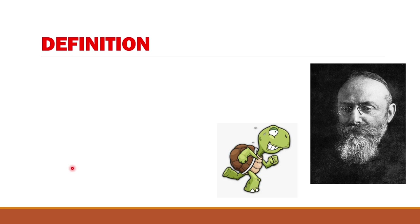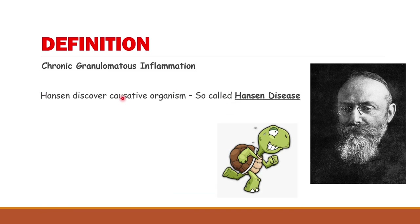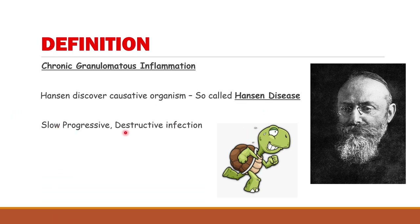Leprosy is a chronic granulomatous inflammation — it comes under the category of chronic inflammation, particularly granulomatous inflammation. Dr. Hansen discovered the causative organism, which is why the disease is also known as Hansen's disease. It is a very slow, progressive, and destructive infection.